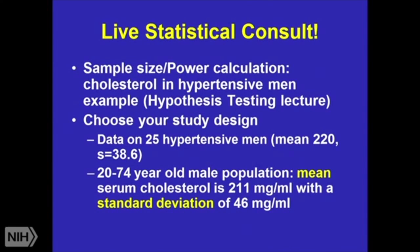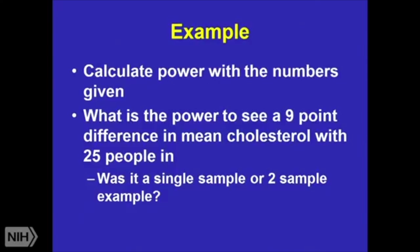It could be different, because sometimes as we're treating hypertension, we're treating a lot of other things, including hypercholesterolemia. So we're going to calculate the power with the numbers given: what's the power to see a nine-point difference in mean cholesterol with 25 people? Is this a single sample or a two-sample test? If I'm comparing to population-level information, this is really a one-sample test.